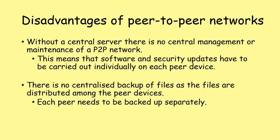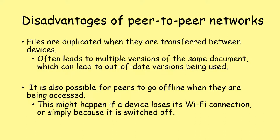Moving on to the disadvantages: without a central file server, there is no central management or maintenance of a peer-to-peer network. Software and security updates have to be carried out individually on each peer device. There's also no centralized backup of files, as files are distributed amongst the peer devices, so each peer needs to be backed up separately. Files are duplicated when transferred between devices, which can lead to multiple versions of the same document and people using out-of-date versions. It's also possible for peers to go offline while being accessed — if a device suddenly loses its Wi-Fi connection or is switched off, you can't continue to download that file.